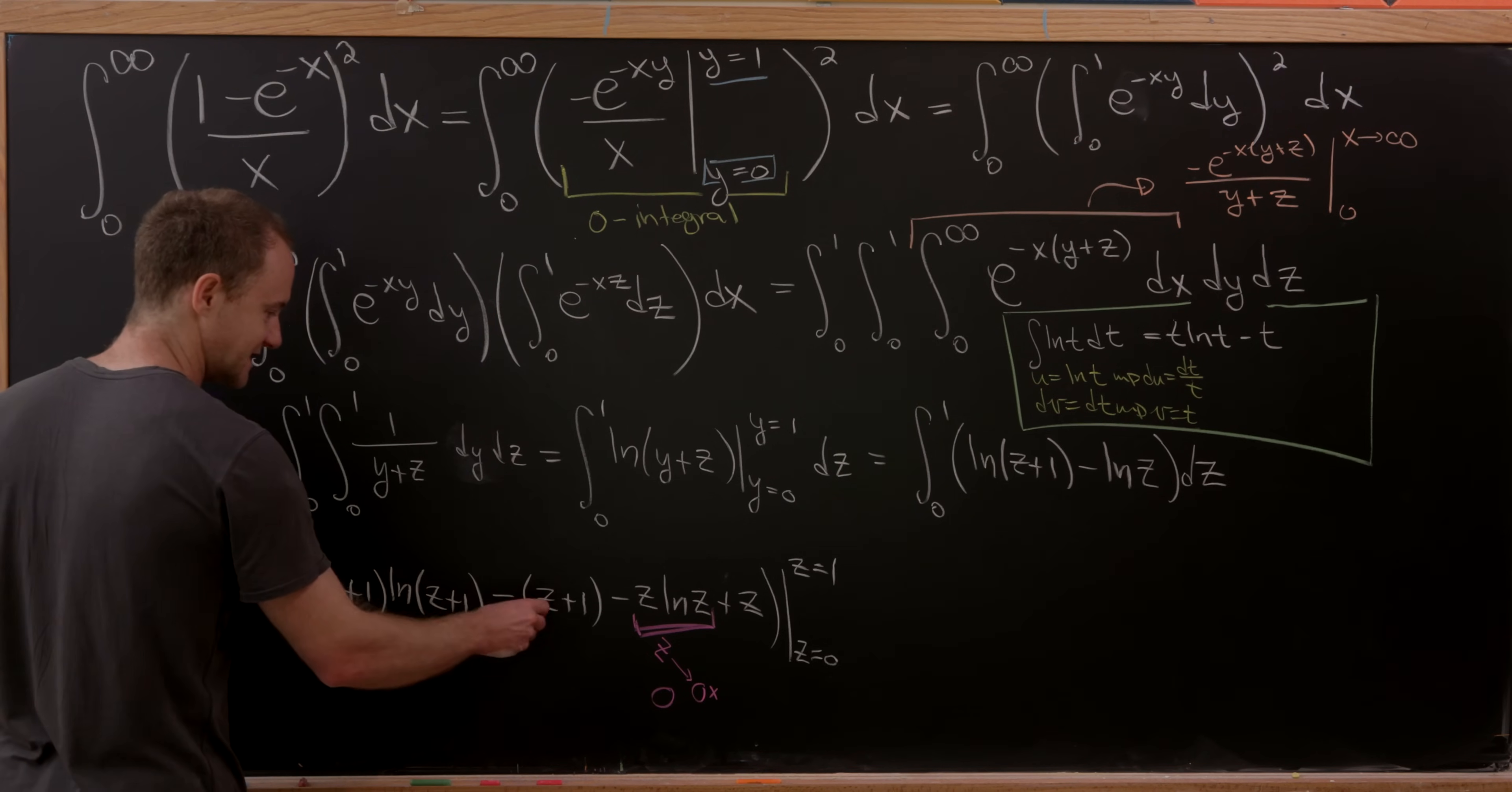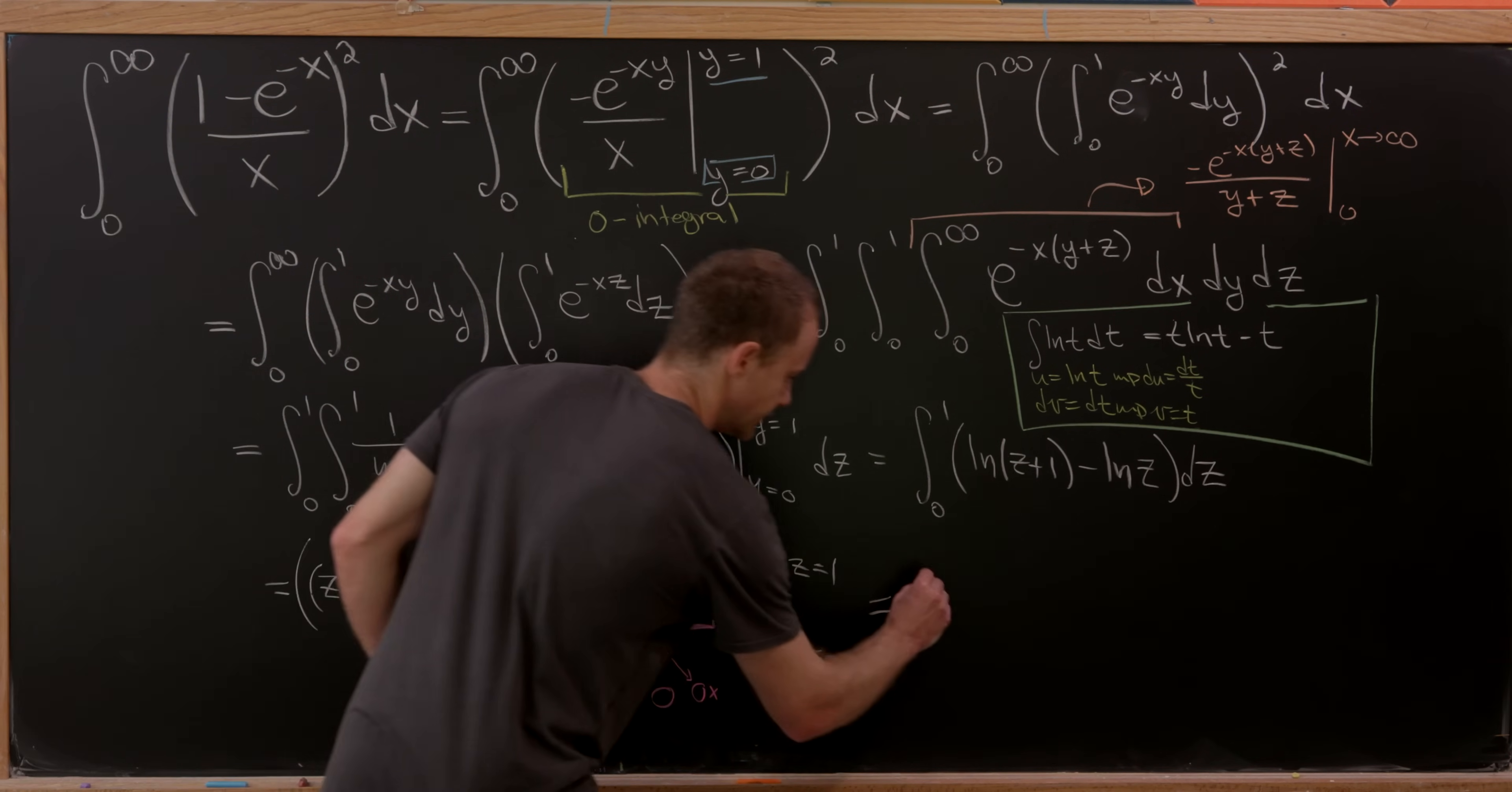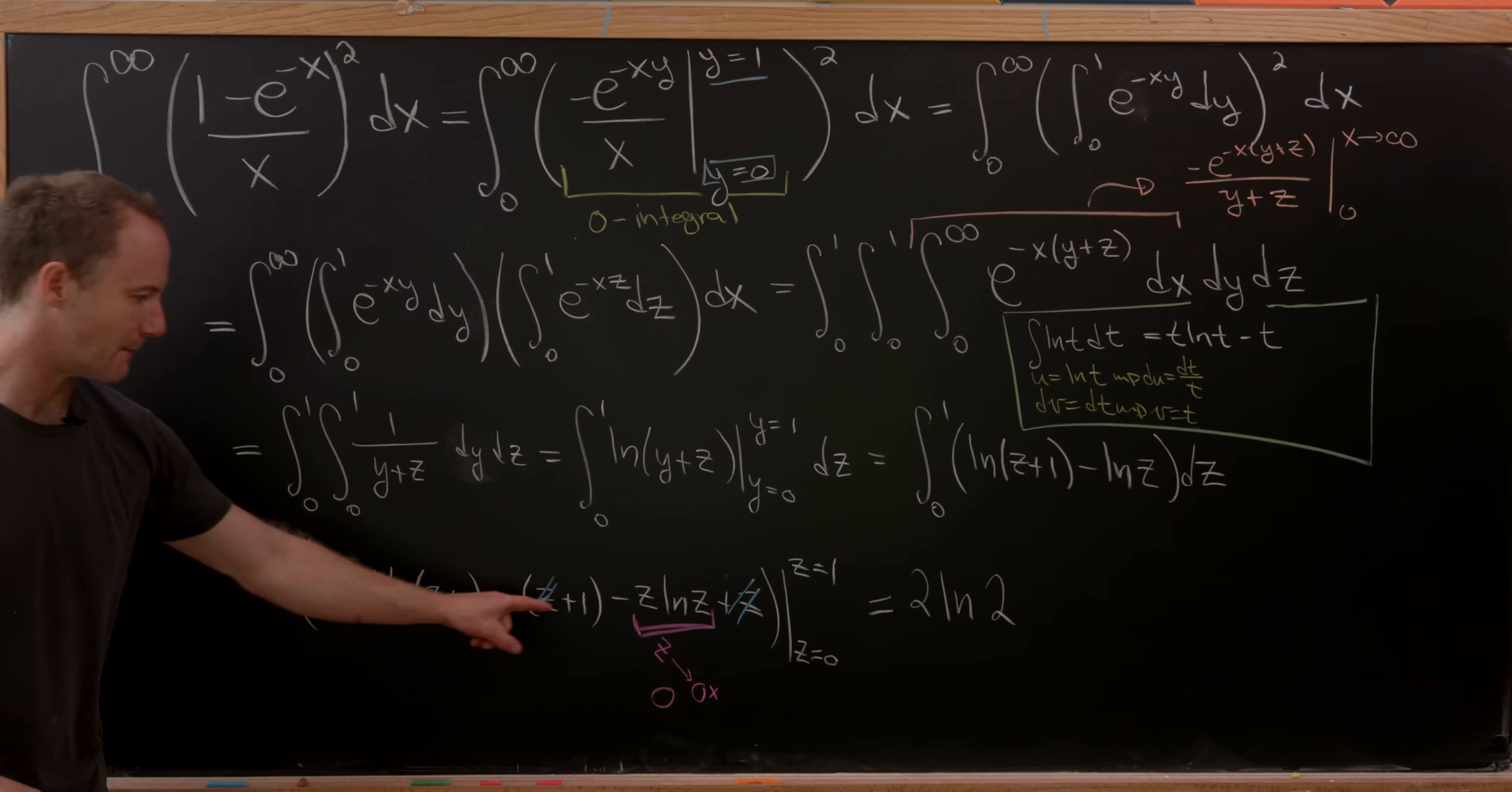So notice this z right here will cancel this z right here. And then we're ready to start evaluating. So if we plug z equals 1 into this whole thing, we'll get 1+1, which is 2, natural log of 2. So we'll get 2 ln(2). And then z equals 1 plugged in here, we'll have natural log of 1, which is 0. So that actually doesn't contribute anything at all. And then we'll also get this minus 1.